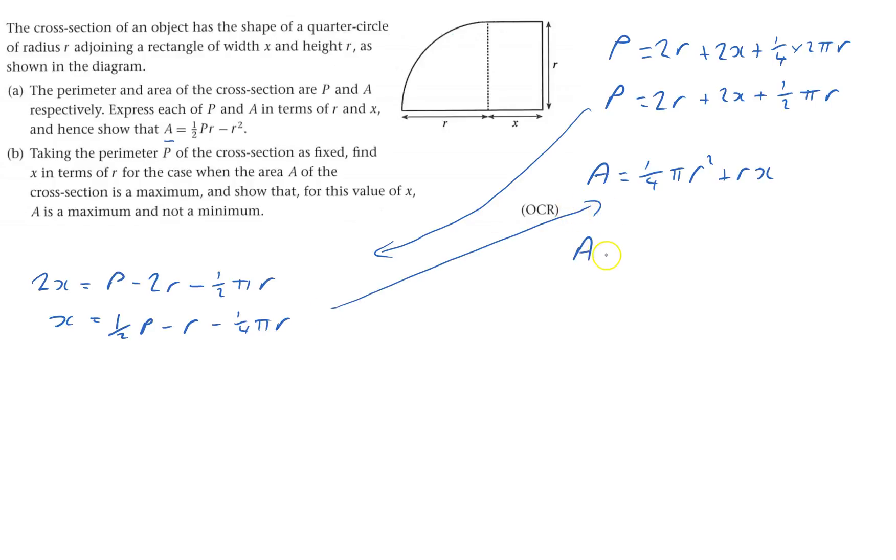And now I can put that x into this expression for A to get A equals a quarter πr squared plus r times by this bit, a half P minus r minus a quarter πr.